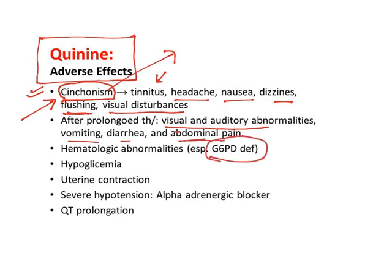Quinine also causes hematological abnormalities in people with glucose-6-phosphate dehydrogenase (G6PD) deficiency, hypoglycemia, uterine contractions, severe hypotension, and QT prolongation. Because of these multiple adverse effects, the use of quinine is restricted.